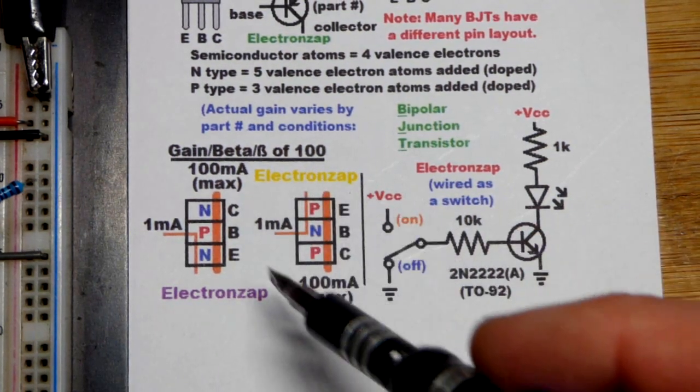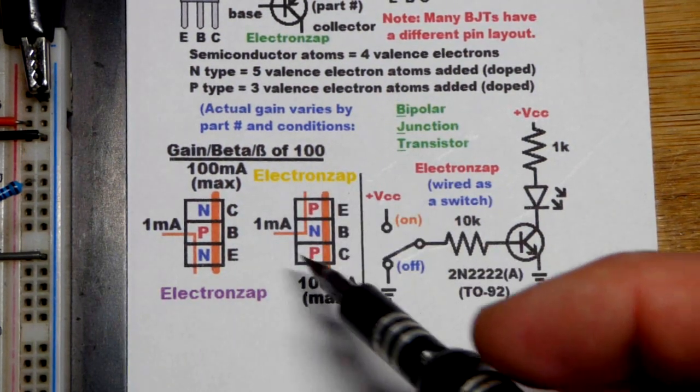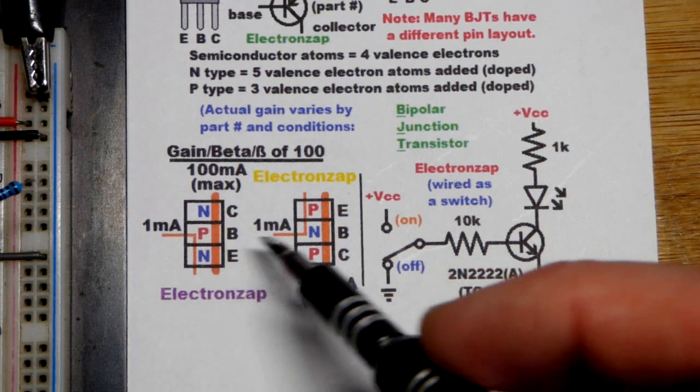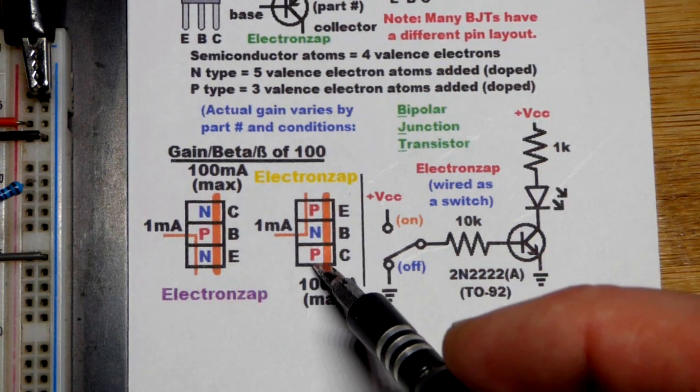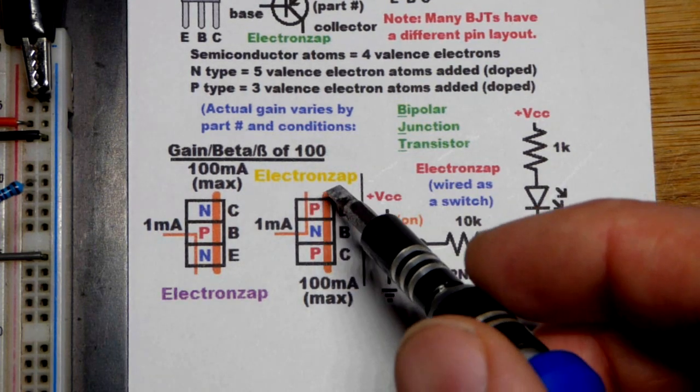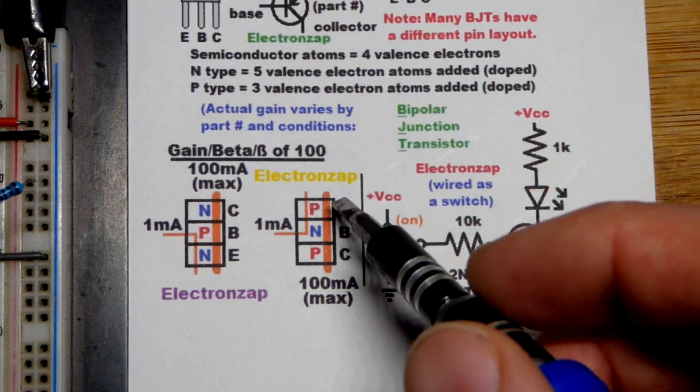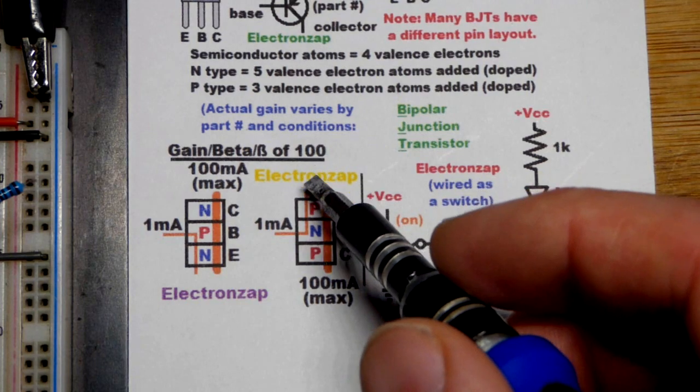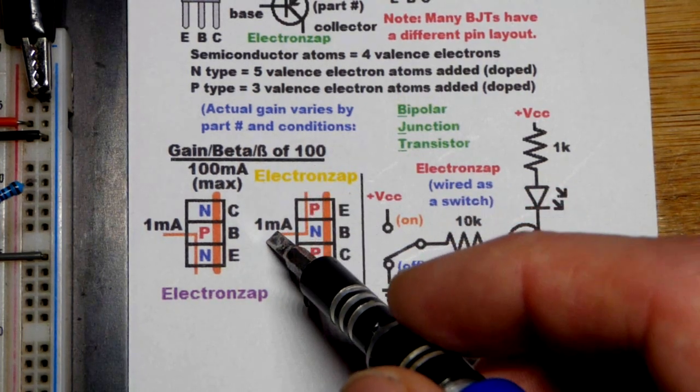Now we'll quickly talk about the PNP bipolar junction transistor. So it works like the NPN, same rules and everything, but the chemistry is opposite. So current flows through it in the opposite direction. That's the main thing you've got to be aware of. So the emitter now is to the positive side of the supply. You get a little current from emitter to base.